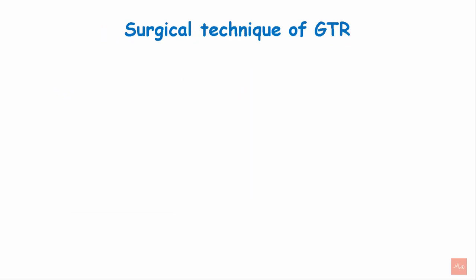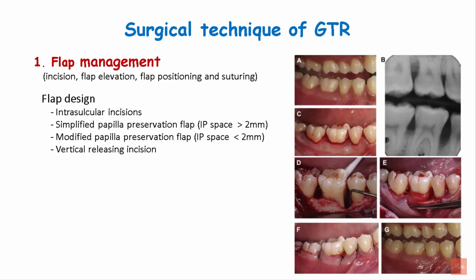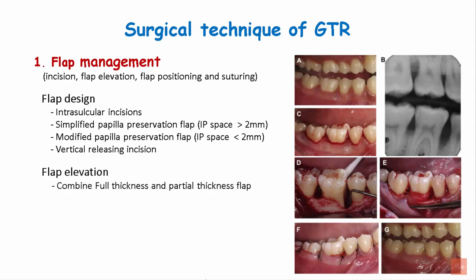The surgical technique of guided tissue regeneration begins with flap placement, which involves incision. The incision can either be intracrevicular, simplified papilla preservation if the interproximal space is more than 2 mm, modified papilla preservation flap if the interproximal space is less than 2 mm, and vertical releasing incision when required. This is followed by flap elevation, which involves a full-thickness flap from the margin towards the mucogingival junction and a partial-thickness flap beyond the mucogingival junction. The final position of the flap will cover the entire membrane.